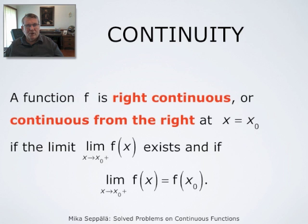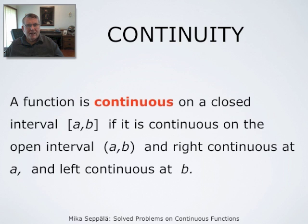Clearly, if a function is both left and right continuous at a point, then it is continuous. And vice versa, if a function is continuous at a point, then it is also left continuous and right continuous. We say that a function is continuous on a closed interval from a to b if it is continuous on the corresponding open interval from a to b, and right continuous at a and left continuous at b.